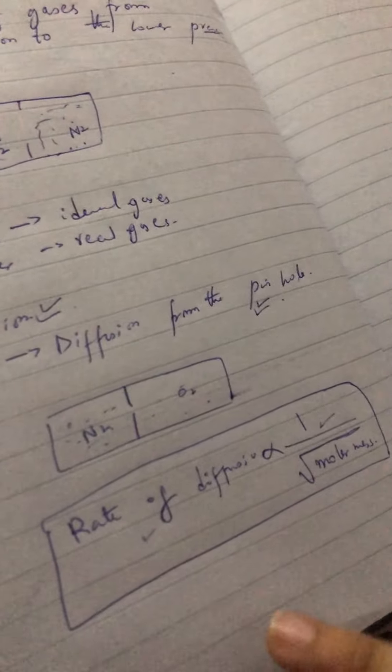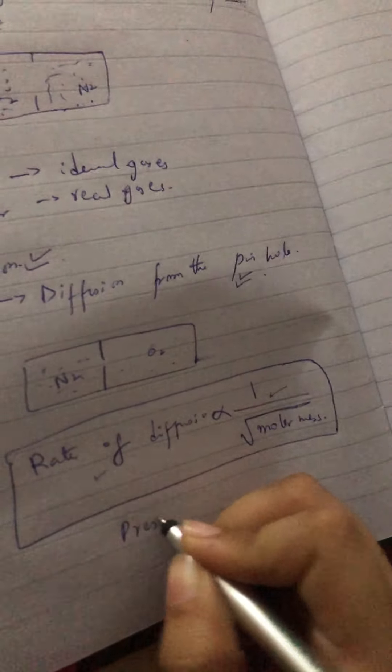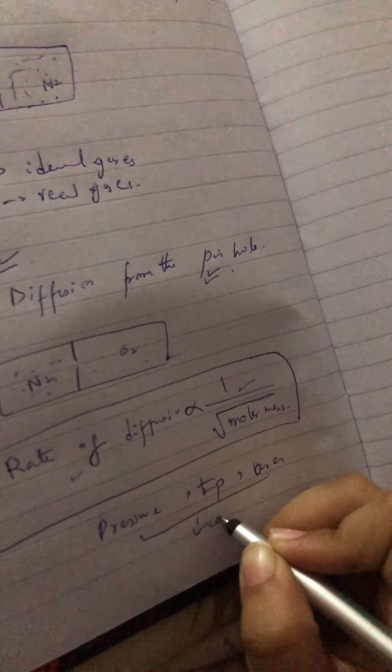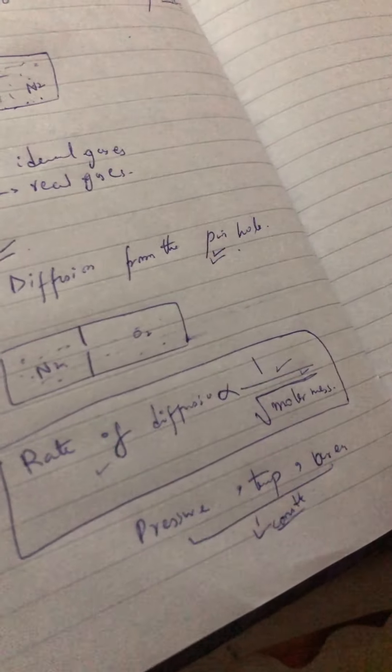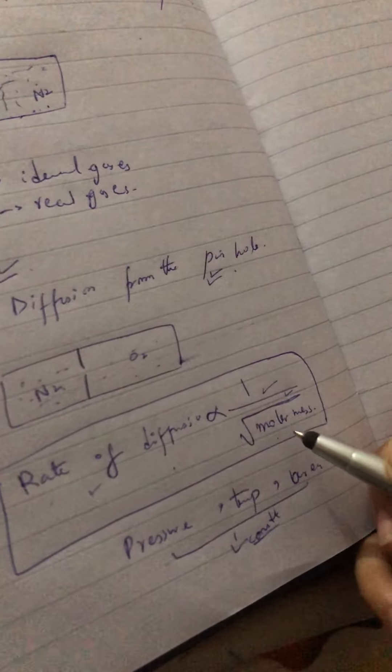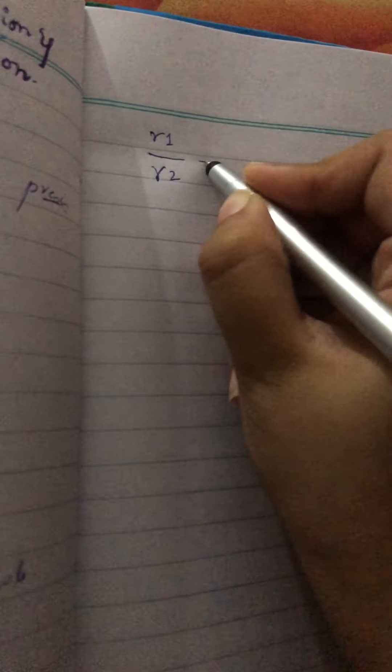Here, pressure, temperature, and area are kept constant, while molar mass is the variable. He said the rate of diffusion is inversely proportional to the square root of its molar mass when pressure, temperature, and area are constant. So: R1 / R2 = √(M2 / M1), where M1 and M2 are the molar masses of gas 1 and gas 2 respectively.